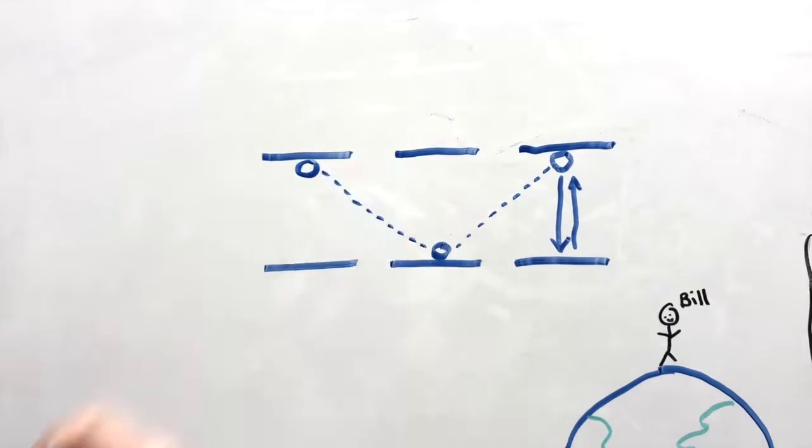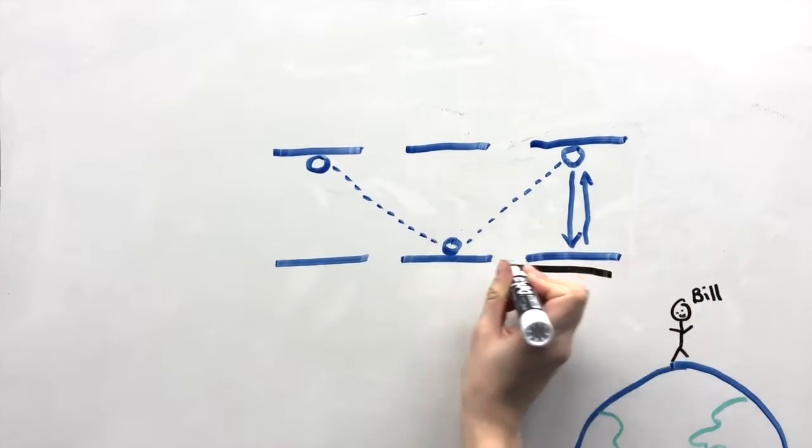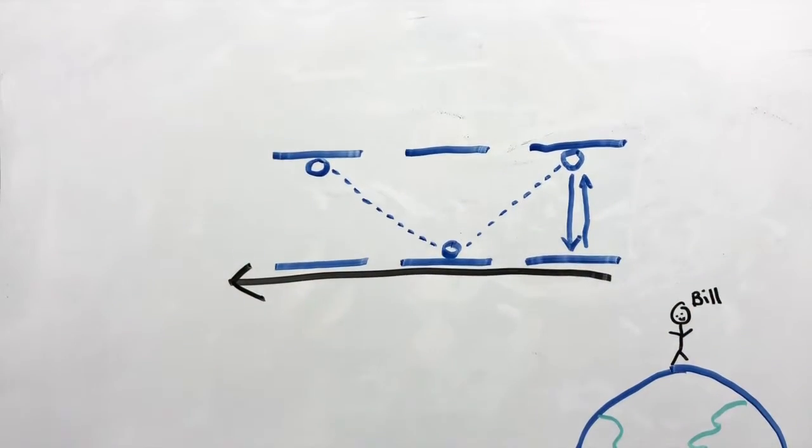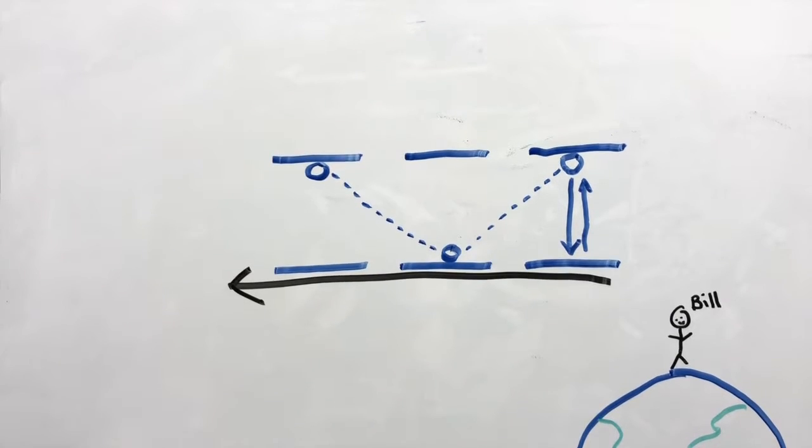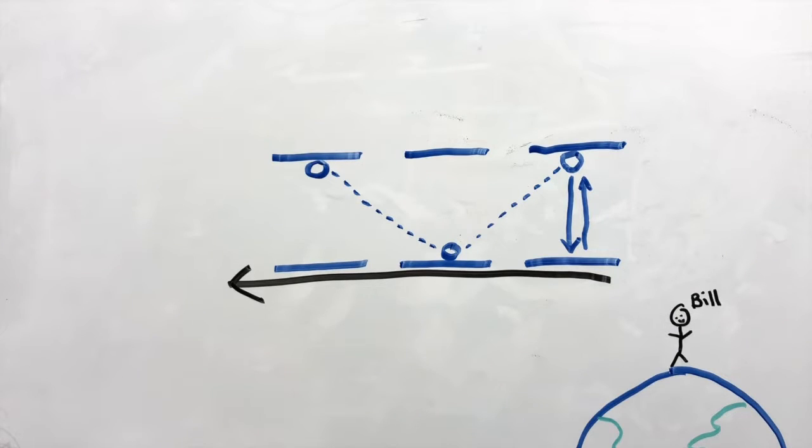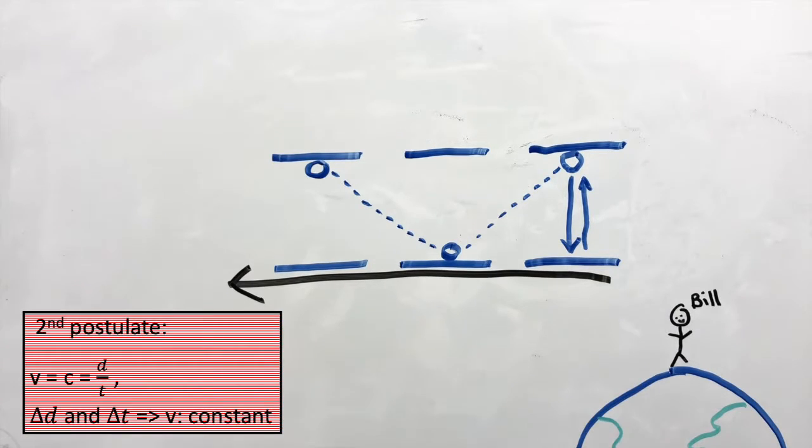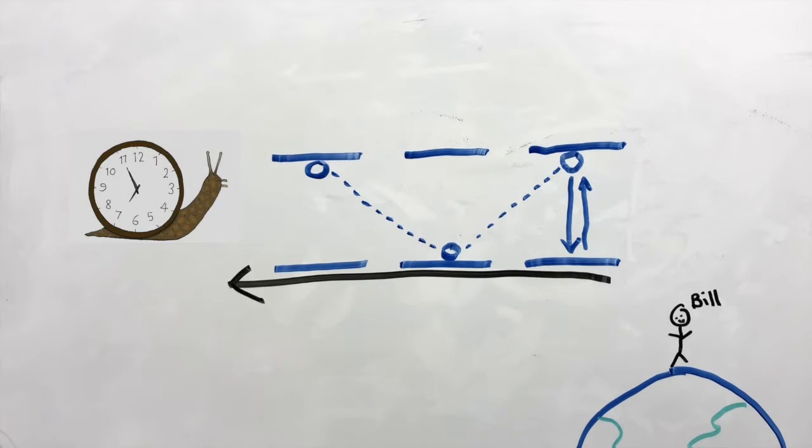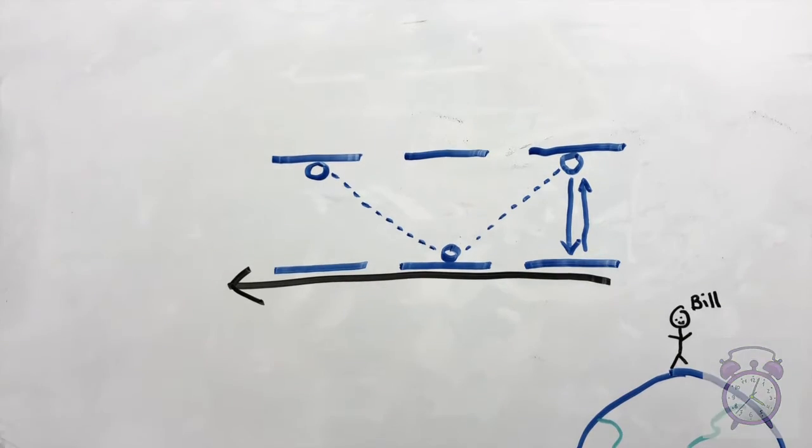Well, now we have a problem. Which observer is right if both observers measure two different lengths? Don't need to panic on the Titanic since both observers are right. According to the second postulate, once distance changes, time changes as well in order for speed to remain a constant. Therefore, time passes slower for the observer on the rocket ship relative to the time on Earth.